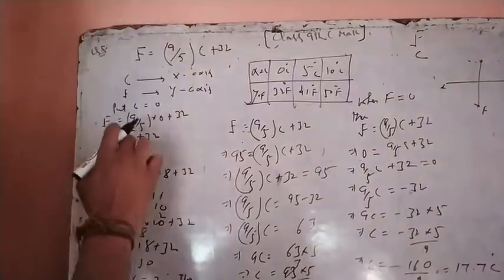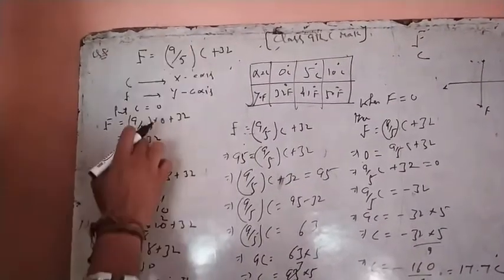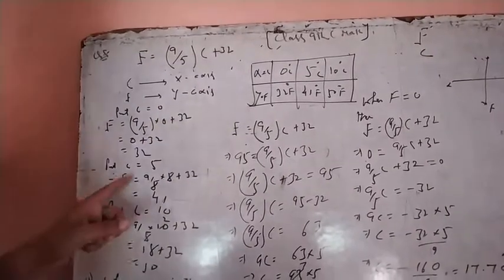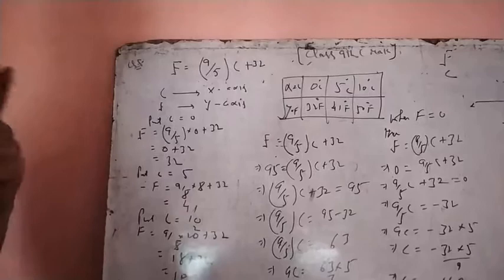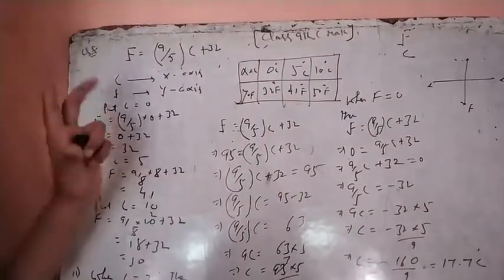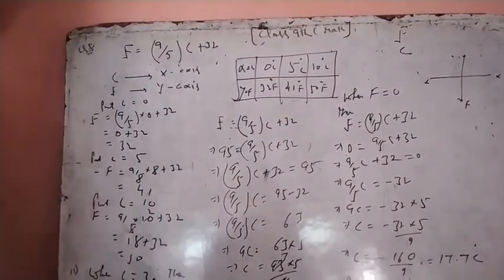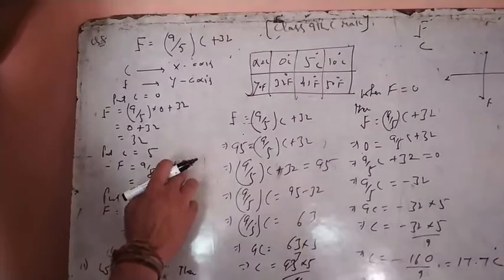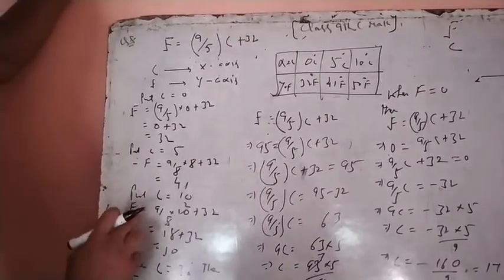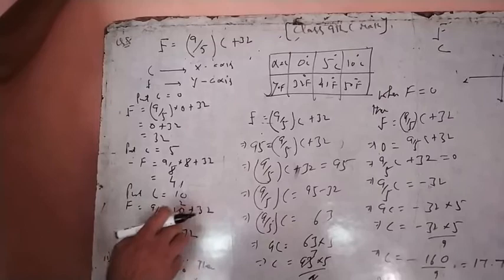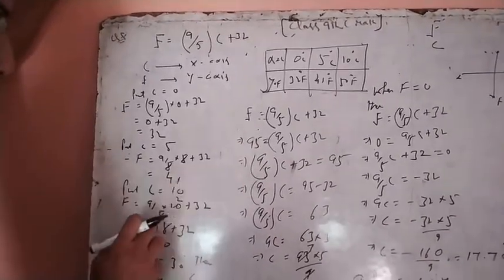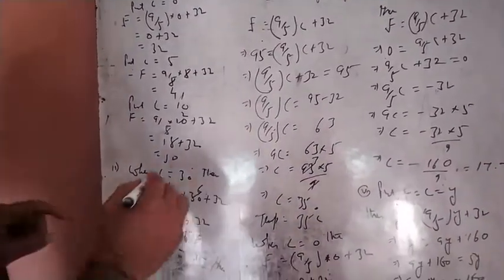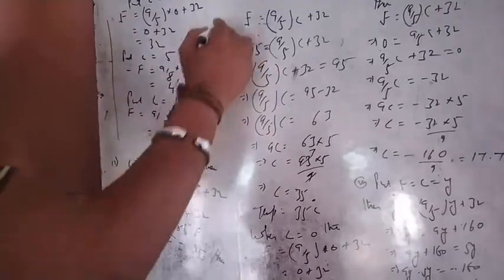When C is 0, F equals 9/5 times 0 plus 32, which is 32. When C is 5, F equals 9/5 times 5 plus 32, which is 9 plus 32 equals 41. When C is 10, F equals 9/5 times 10 plus 32. 5 times 2 is 10, 9 times 2 is 18 plus 32 equals 50. So these are the three values.